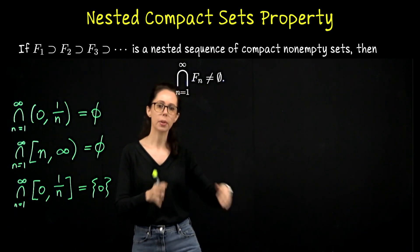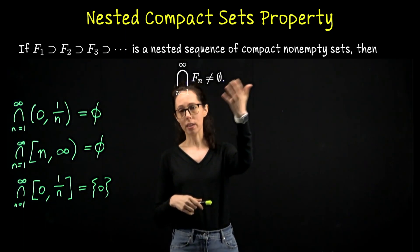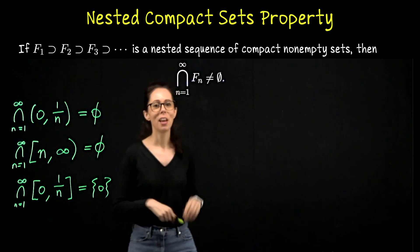So that the first one F₁ contains all the future members, F₂ contains all the future members, F₃ contains all the future members. They all have a point in common. Their intersection is not empty.